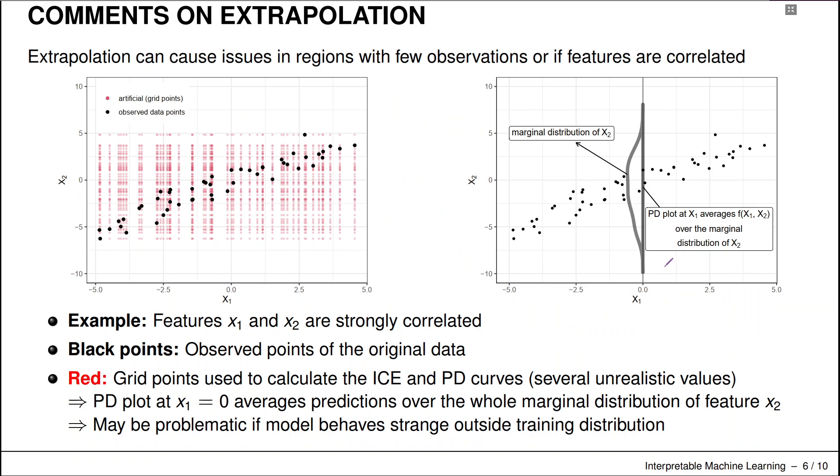Some comments on extrapolations. So I touched upon that in the introductory chapters. Extrapolations can cause issues if we integrate out over fake or artificially generated observations, especially if features are correlated and if there are interactions in our model. And that can really happen with the PDP plots.